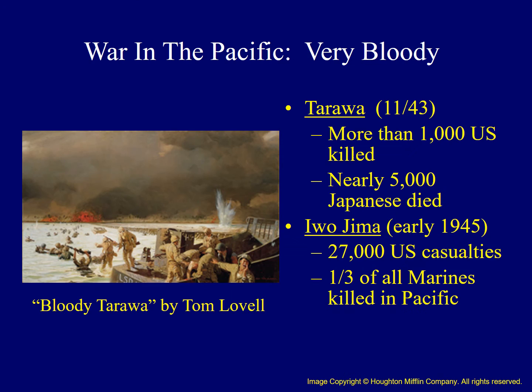The war in the Pacific was particularly bloody, as depicted in a painting by Tom Lovell. Fighting in Tarawa took place in November of 1943, where more than a thousand Americans were killed and about two thousand were wounded — compared to about five thousand Japanese deaths, a five-to-one ratio. Iwo Jima was a tiny island 700 miles from Japan; fighting there in early 1945 led to about 27,000 American casualties. About one-third of all marines killed during the entire Pacific War died at Iwo Jima.